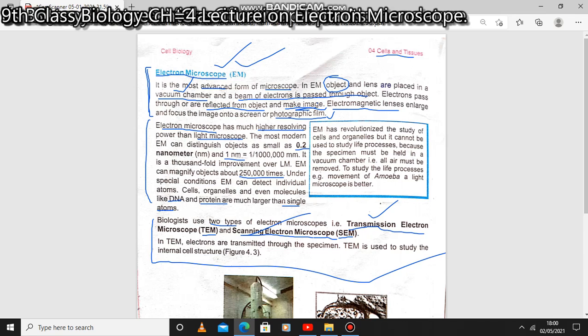The difference between TEM and SEM: first, TEM stands for Transmission Electron Microscope and SEM stands for Scanning Electron Microscope. In TEM, electrons are transmitted through the object placed in the vacuum chamber, which is used to study the internal structure of the cell. In SEM, electrons are reflected from the surface of the object, used to study the surface structure.